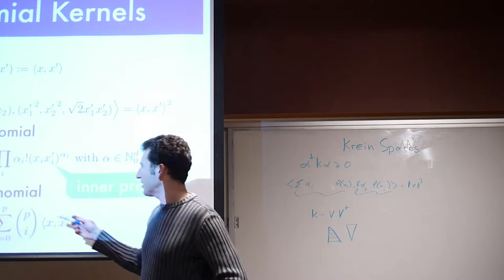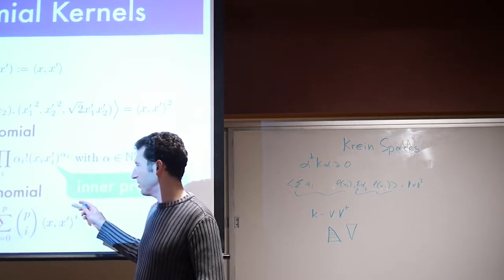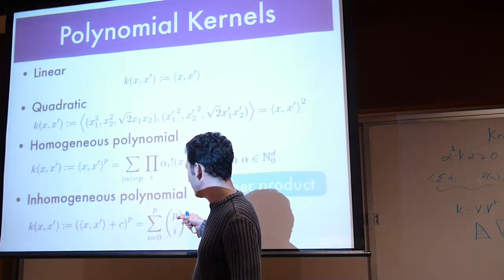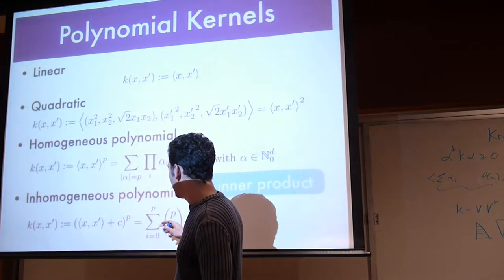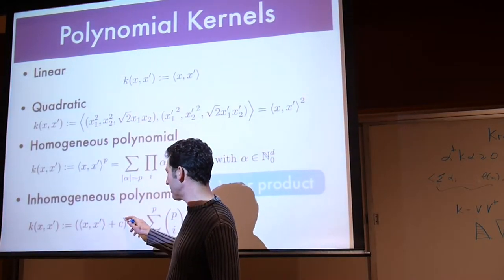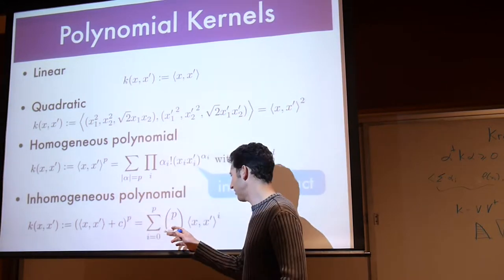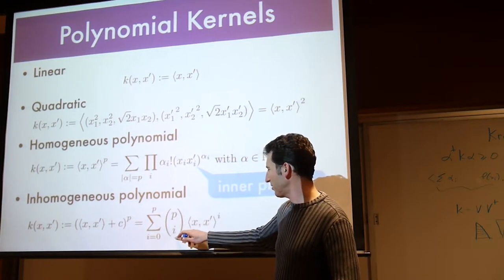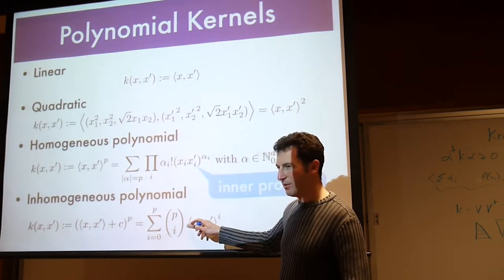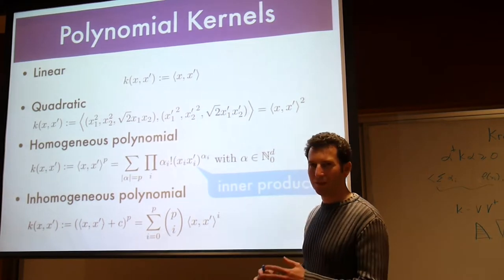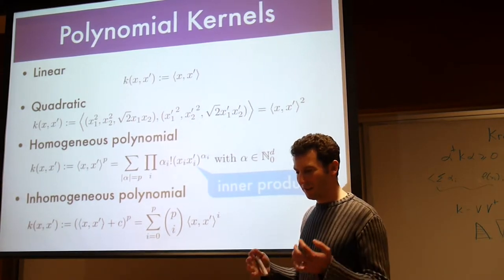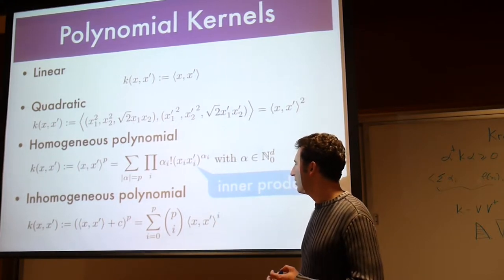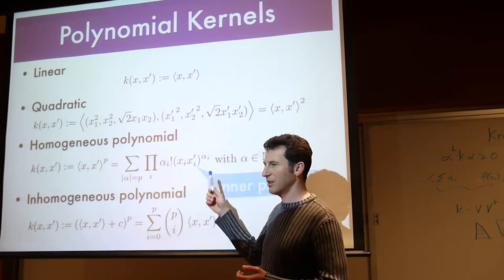Another kernel is the inhomogeneous polynomial: k(x, x') = (x·x' + c)^p. Expanding using the binomial theorem gives a sum of homogeneous kernels of degrees 0 through p. Since each is positive semi-definite and the sum of PSD matrices is PSD, this is also a valid kernel — and there's a missing exponent correction noted by a student.